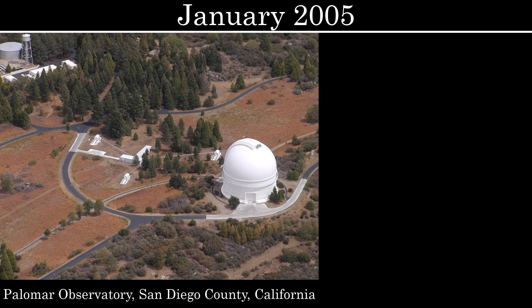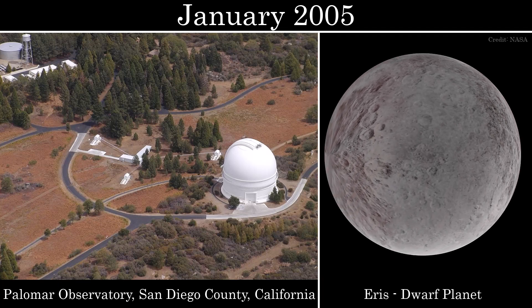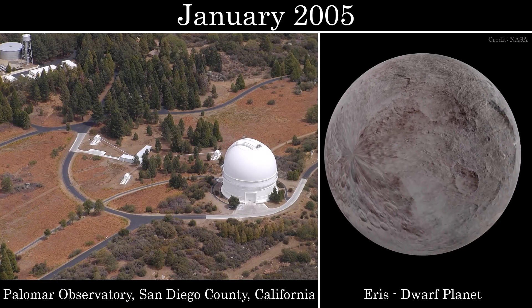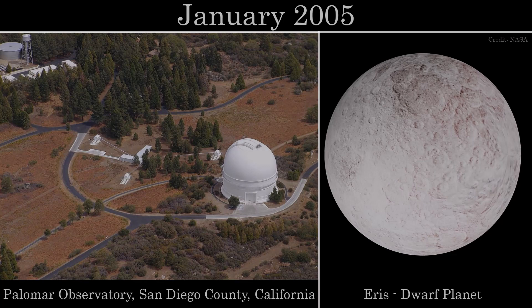It's January 2005, and the Palomar Observatory has just announced the discovery of Eris, a new dwarf planet, the second largest in our solar system, lying just beyond the orbit of Neptune in the Kuiper Belt. This was truly a great achievement, one which would revolutionize astrophysics.